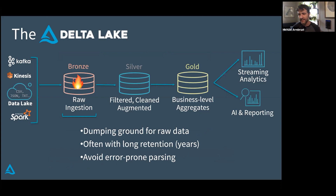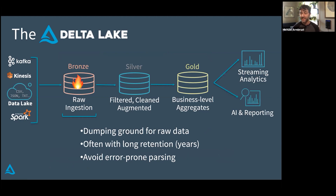Starting at the beginning, we have our bronze data or raw data. This is a dumping ground for everything. It's actually valuable that you can collect this raw garbage data, because you don't know what's going to be valuable later — this might be the one feature you actually need to train your model and get better predictive performance. Delta Lake makes it possible to store years and years of data in a single table.